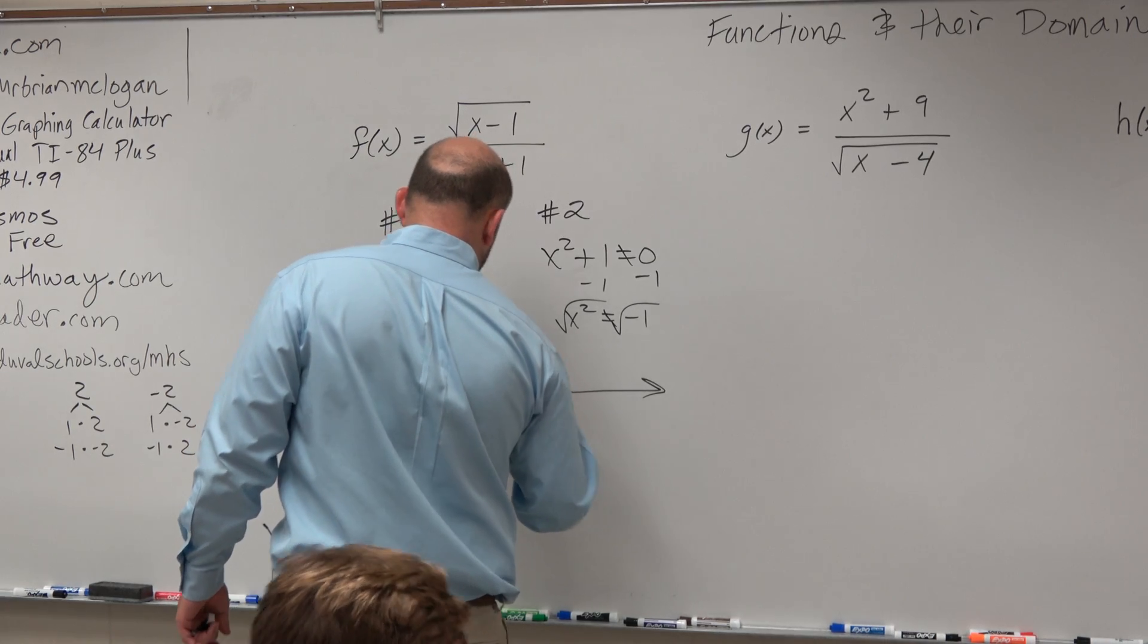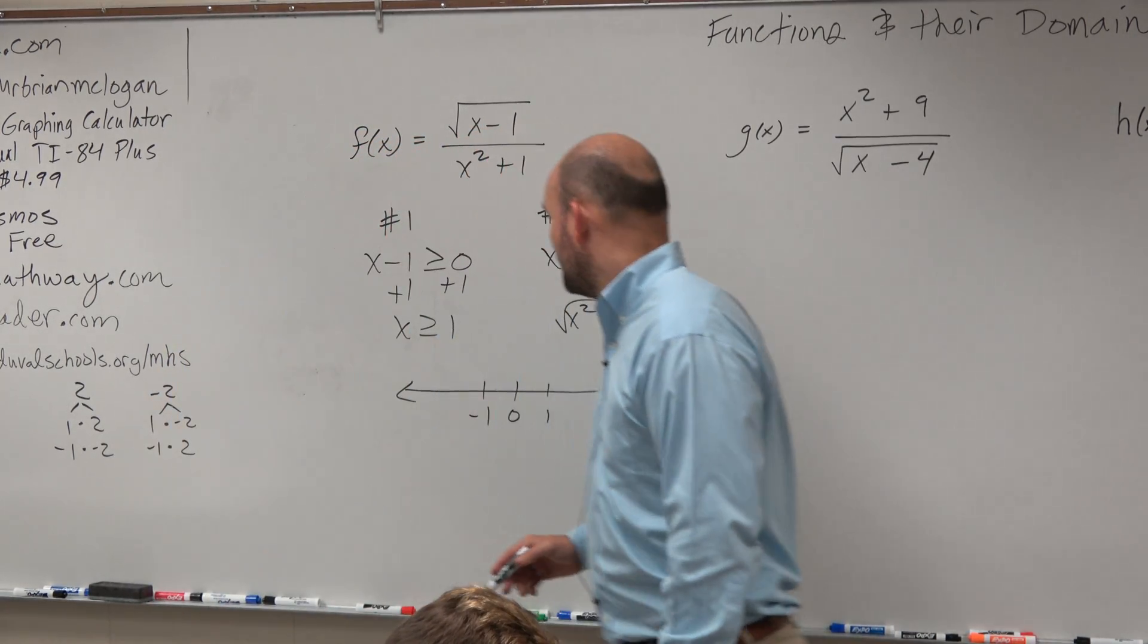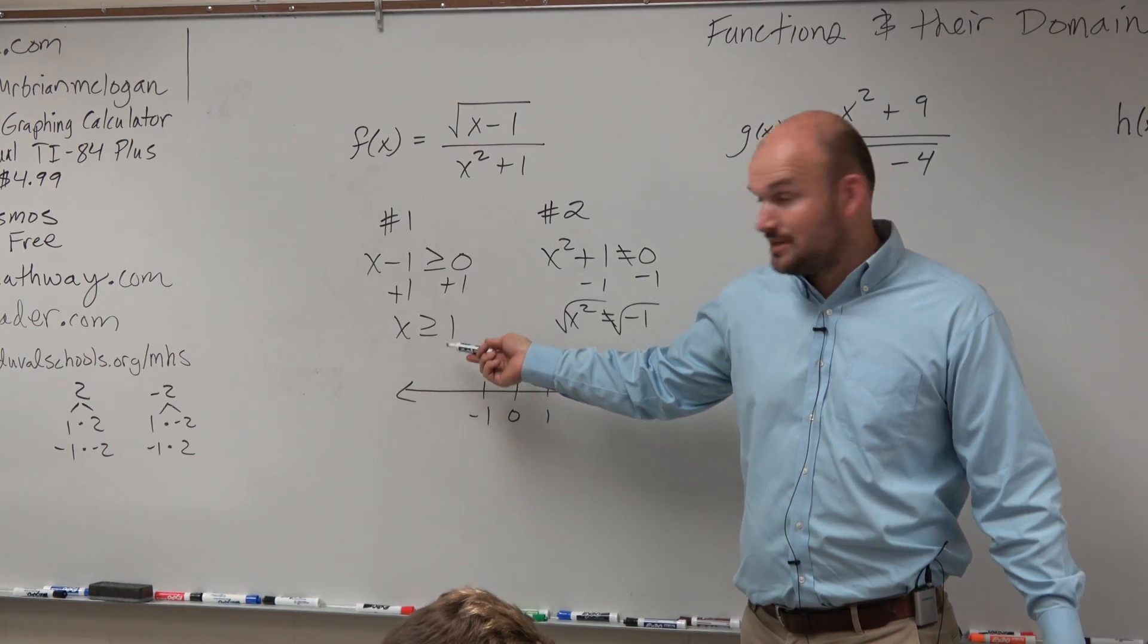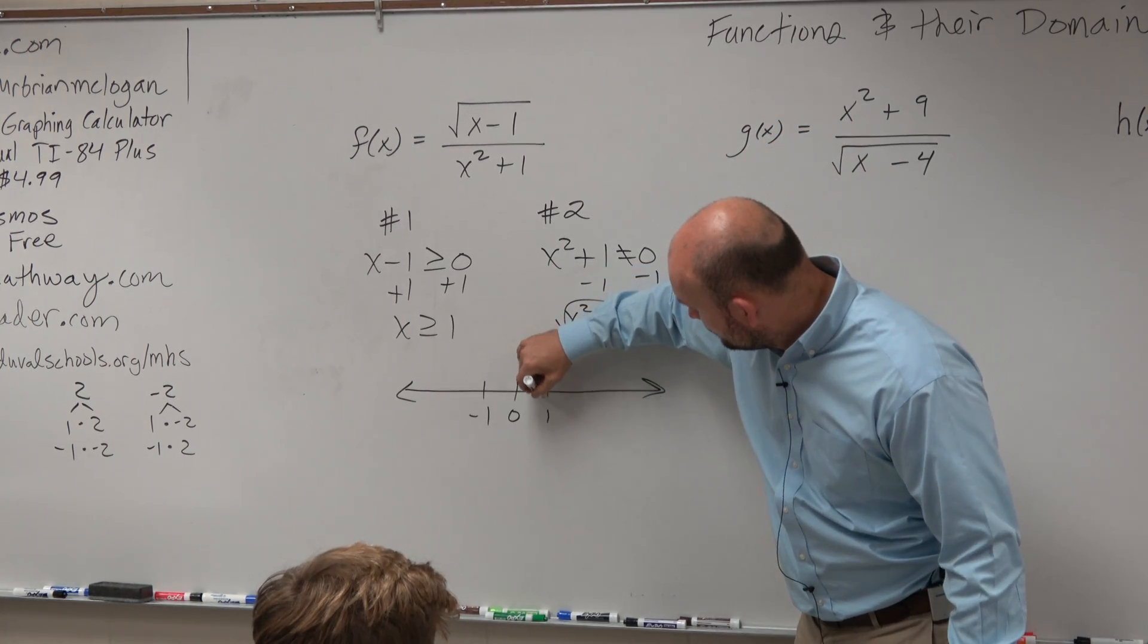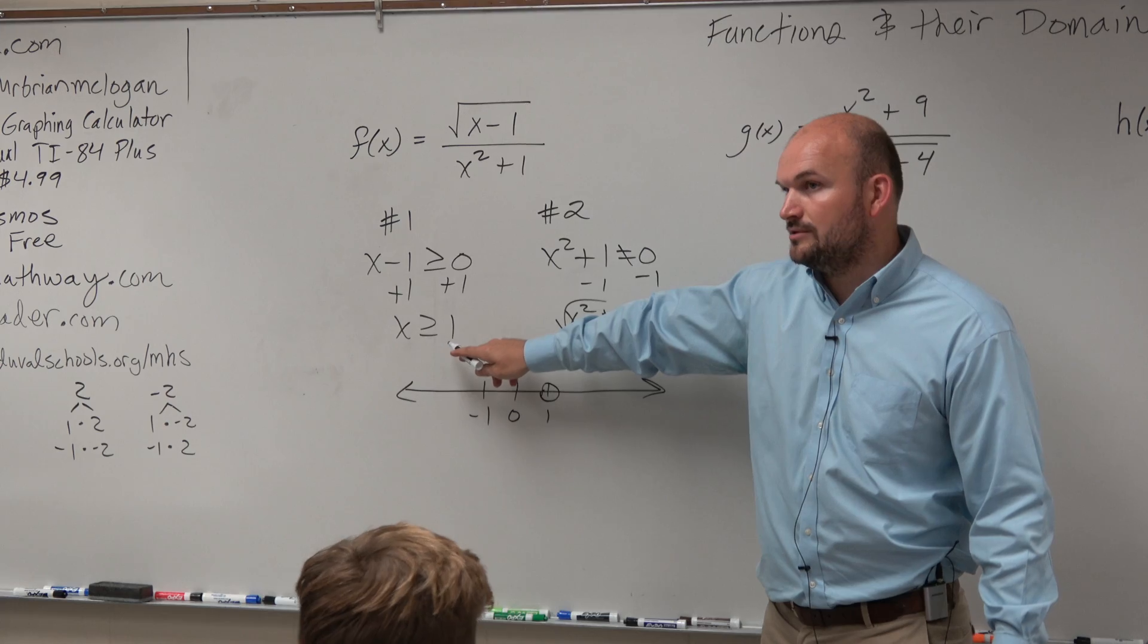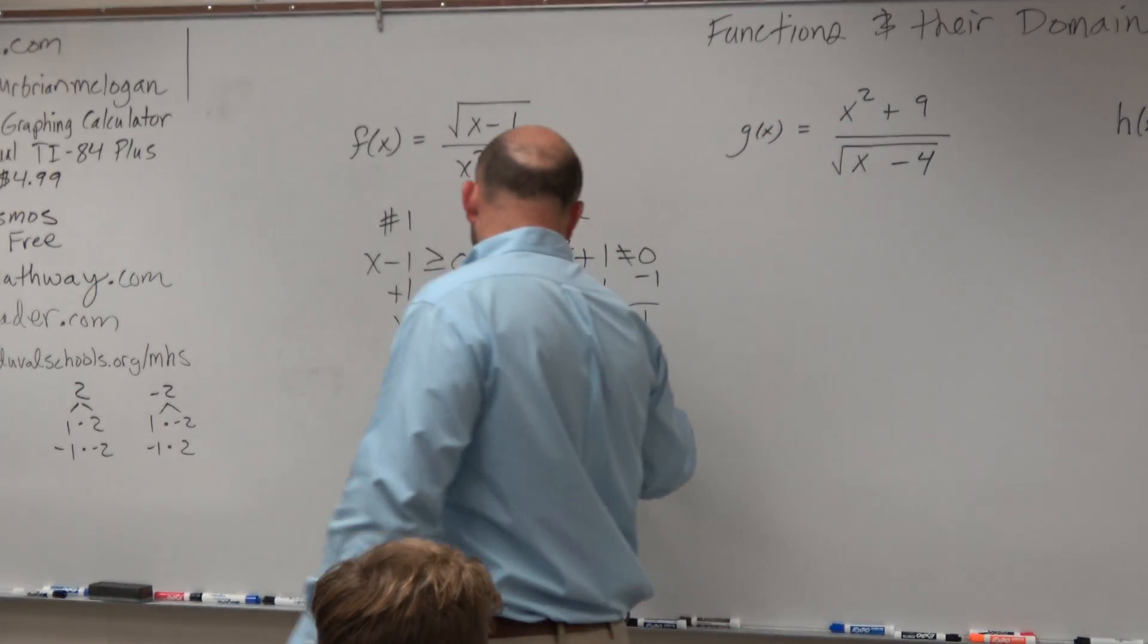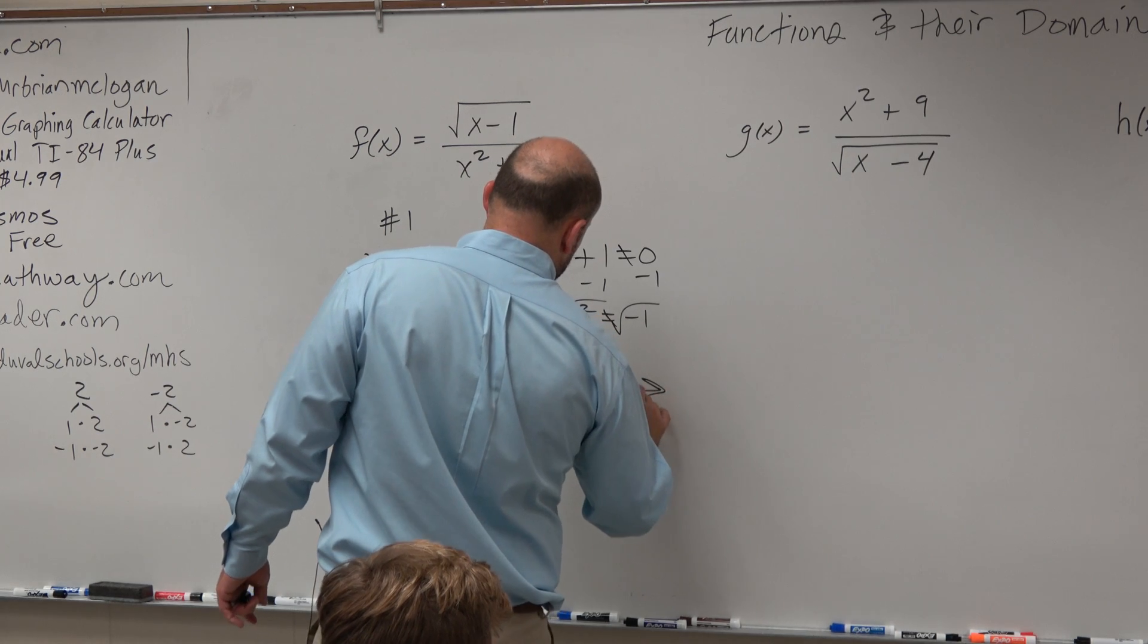Here's 0, here's 1, here's negative 1. X is greater than or equal to 1. You learned how to graph this in algebra 1. How would you graph it? Well, you go to 1. Is it included or excluded? Included. X is greater than, that's going to be going this way.